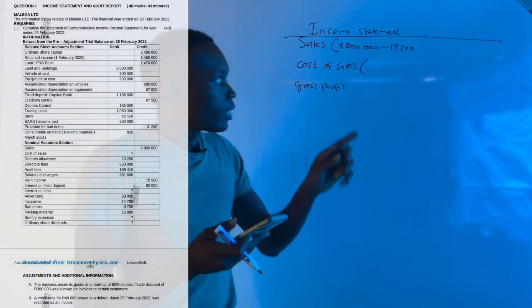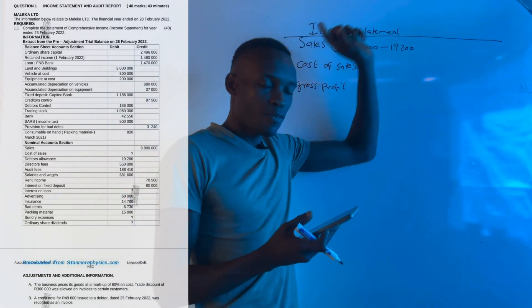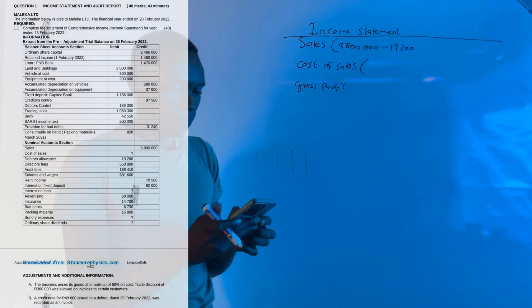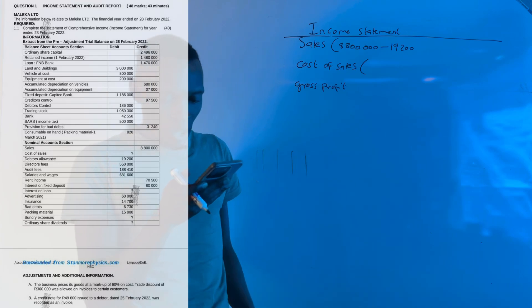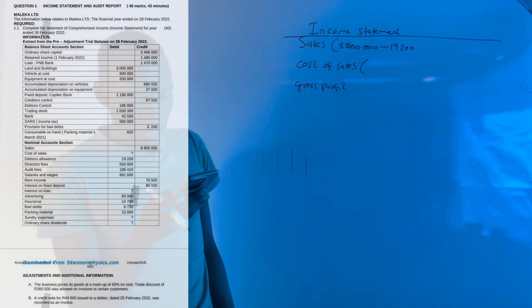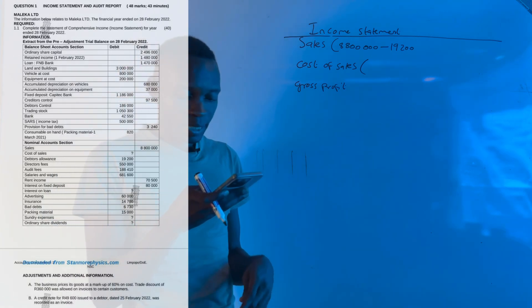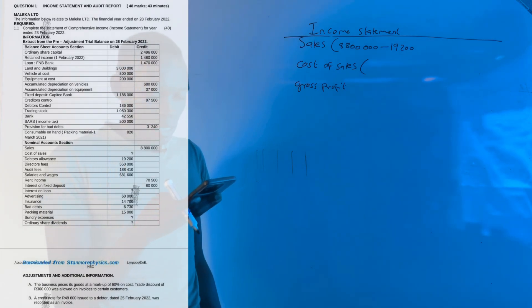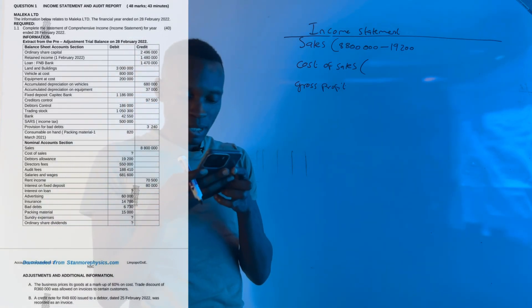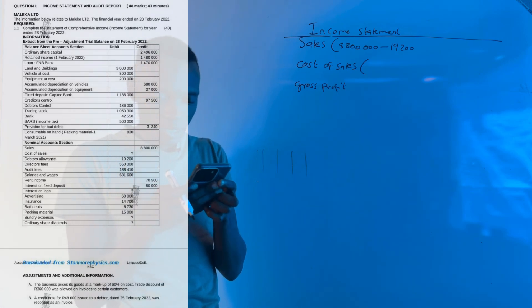However, the amount we are given is 49,600. So what are we going to do? This amount, we have to make sure we record it twice or multiply by 2.